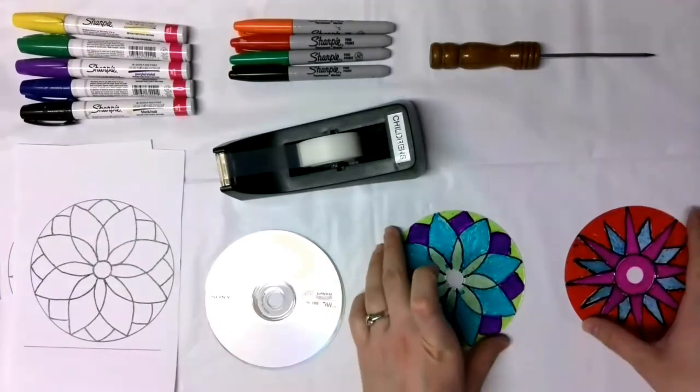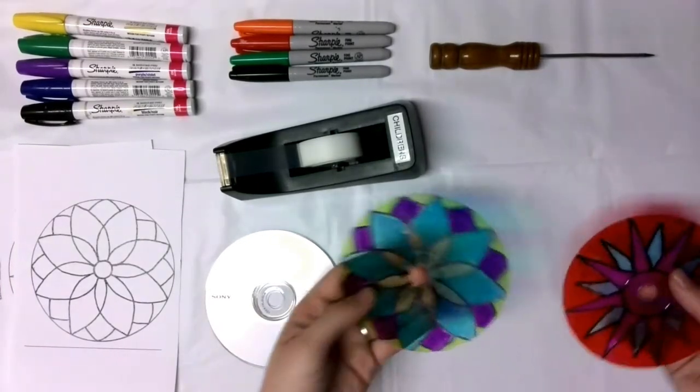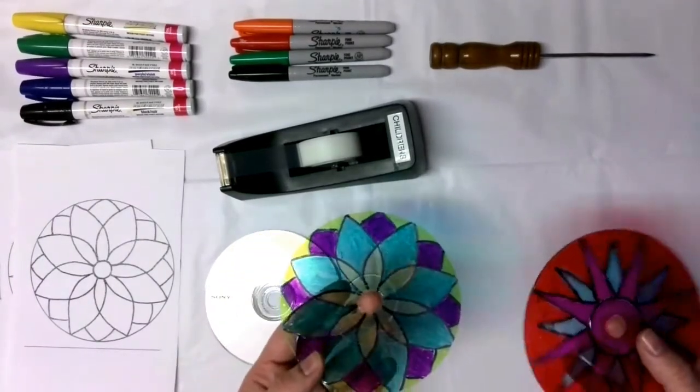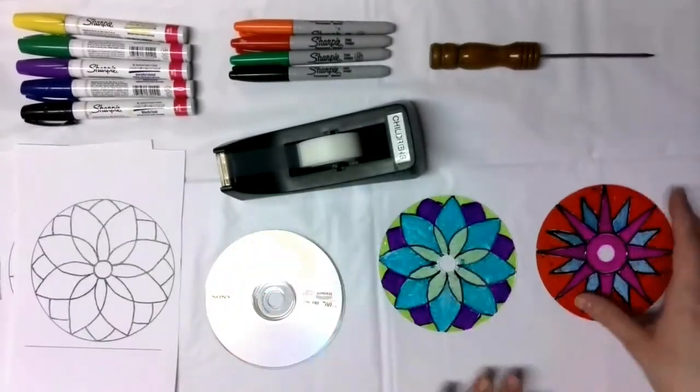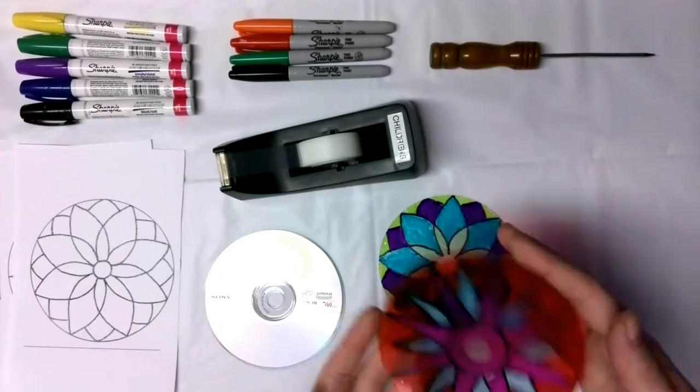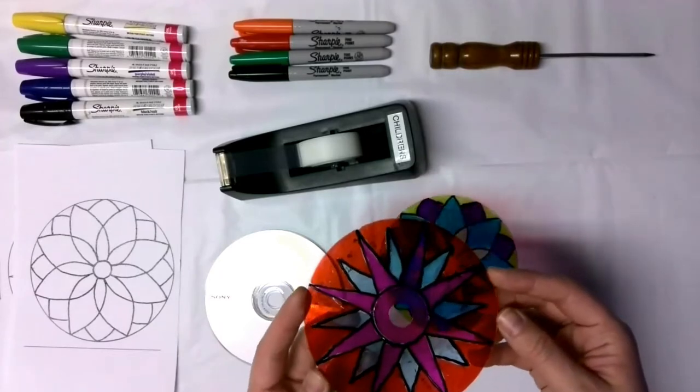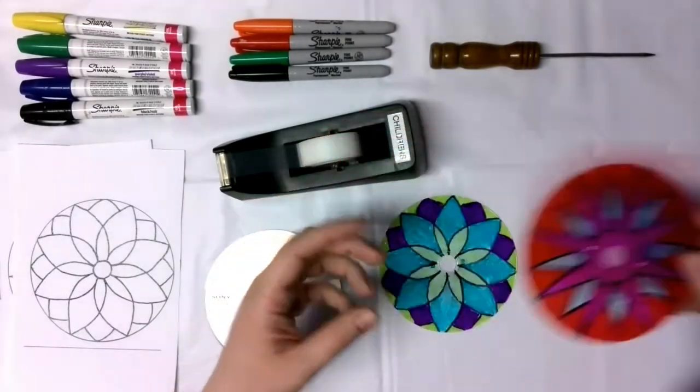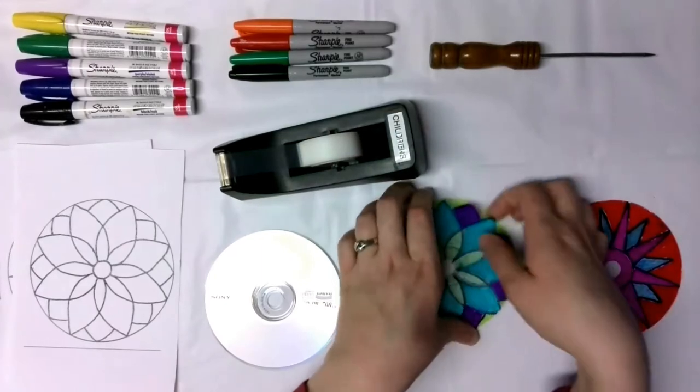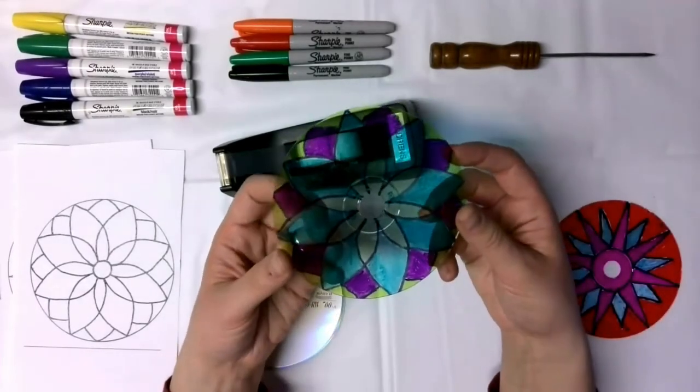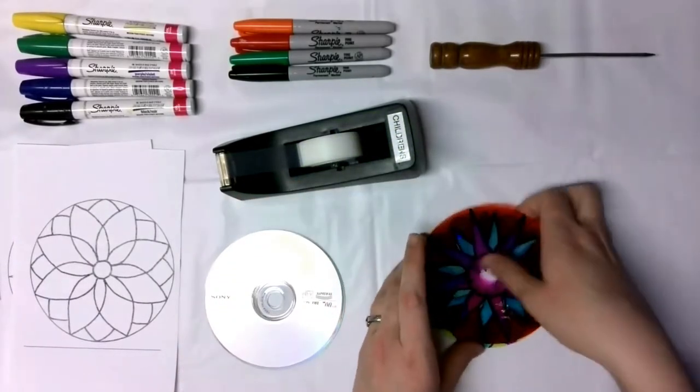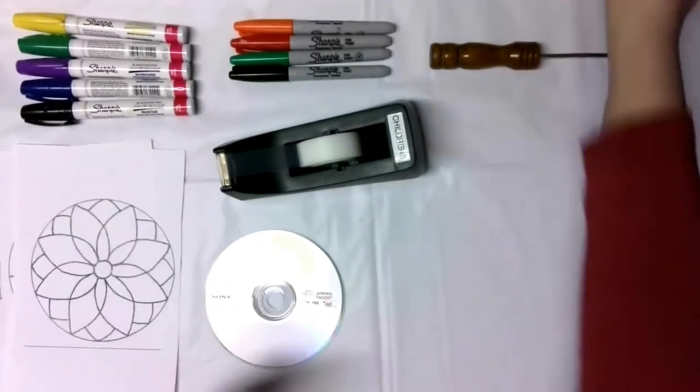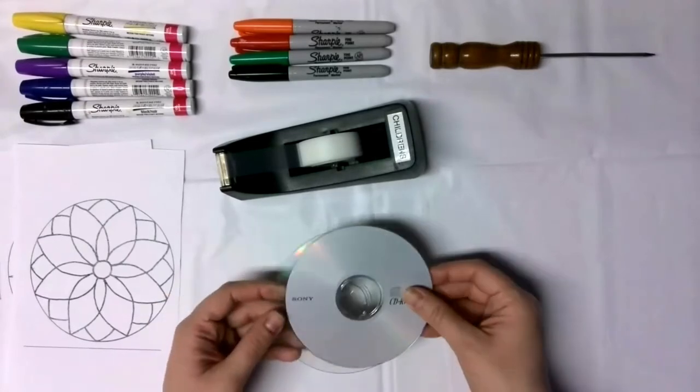Now as you can tell here we have ones that are already completed, these are my samples of them. Pretty nice and kind of very cool. This one was made with the oil-based paint markers and then this other one was made with the water-based paint markers. So we are going to set those aside and we will work on our CD.